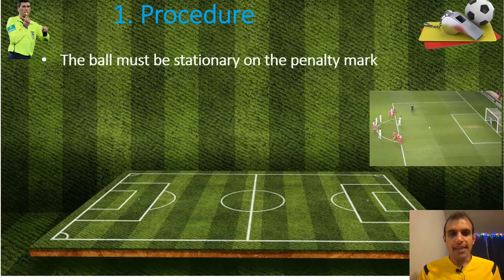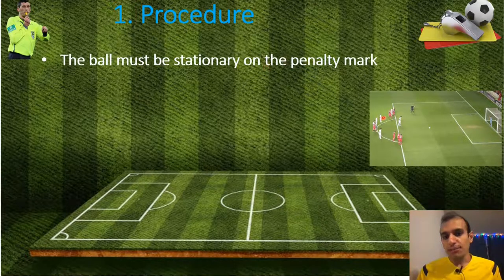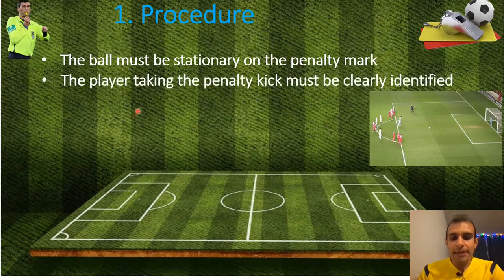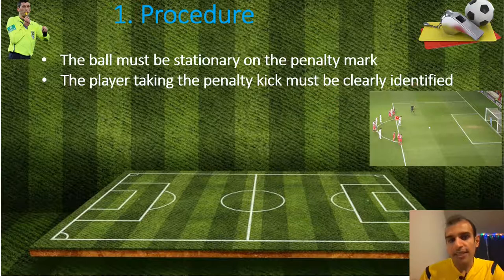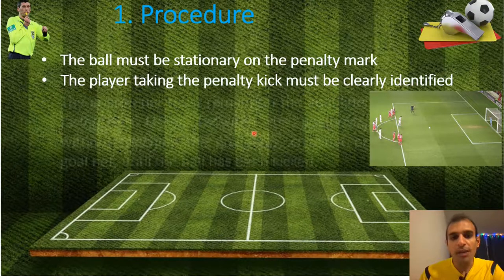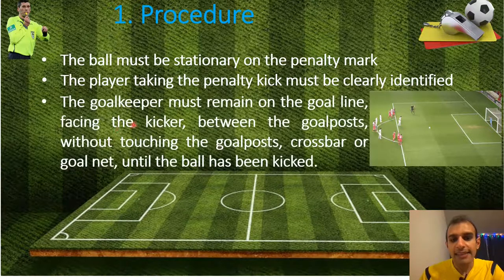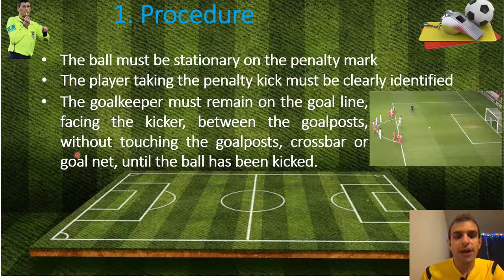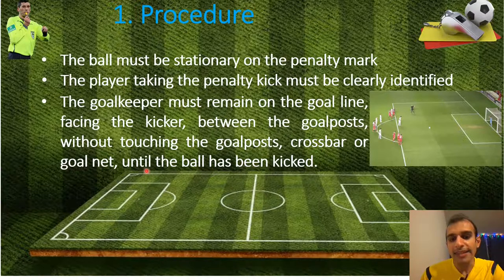First I would like to explain to you about the penalty procedure. The ball must be stationary on the penalty mark, here. The player taking the penalty kick must be clearly identified — for example, this player will kick the ball. The goalkeeper must remain on the goal line facing the kicker, between the goalposts, without touching the goalpost, crossbar, or goal net until the ball has been kicked.